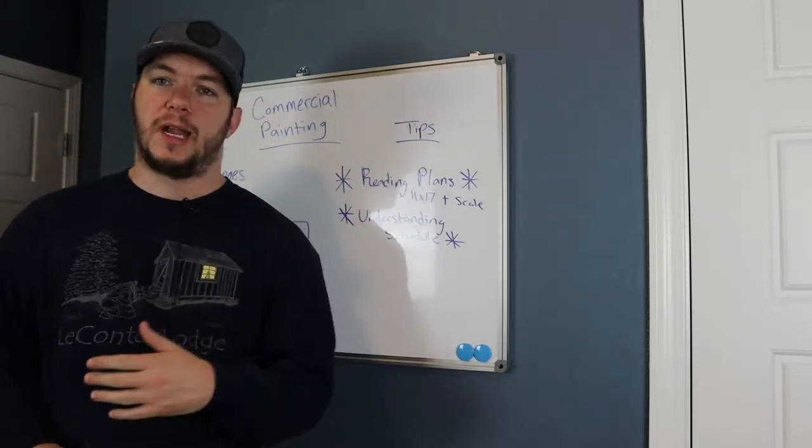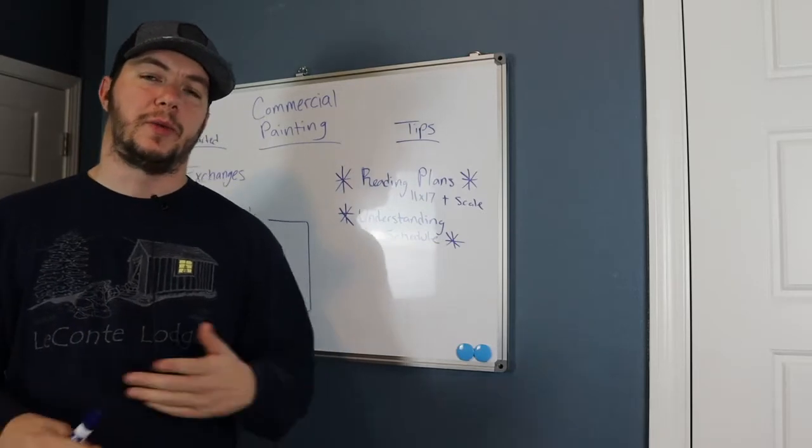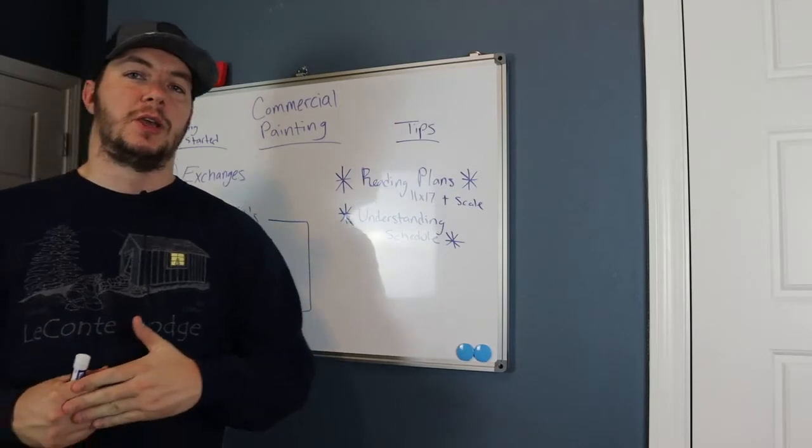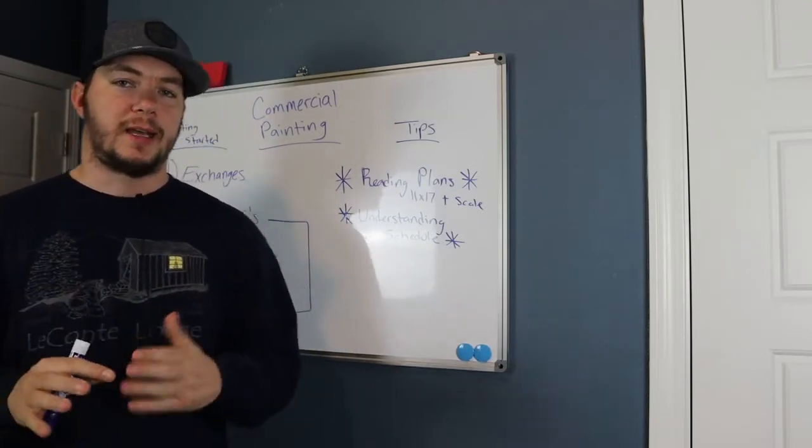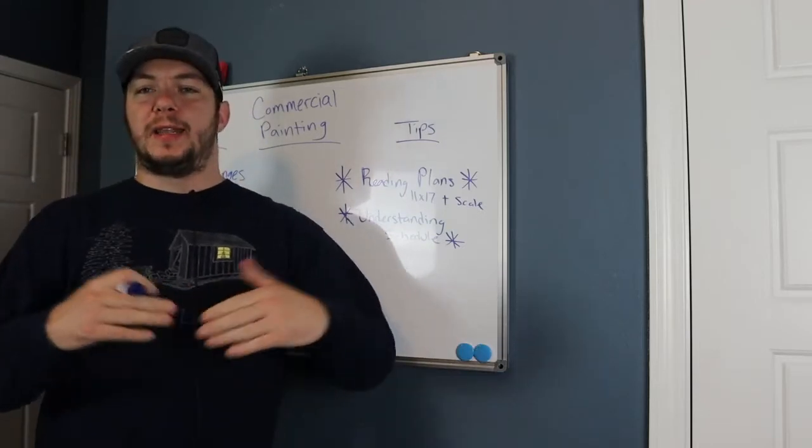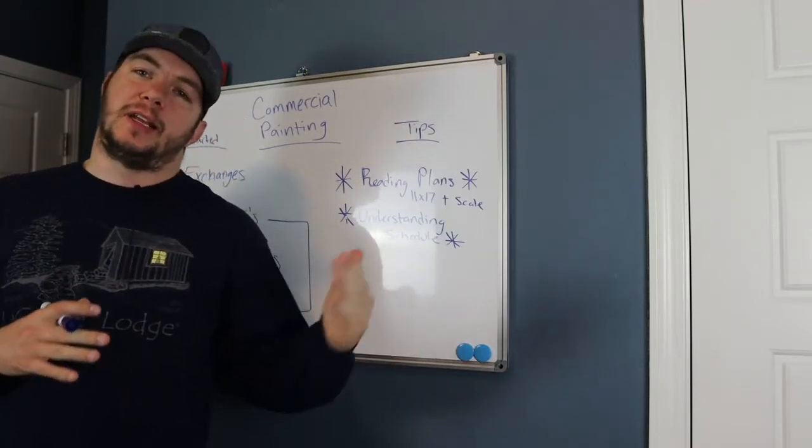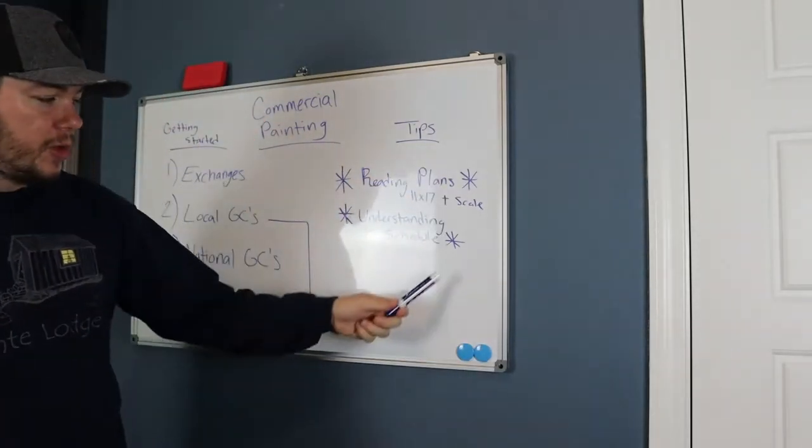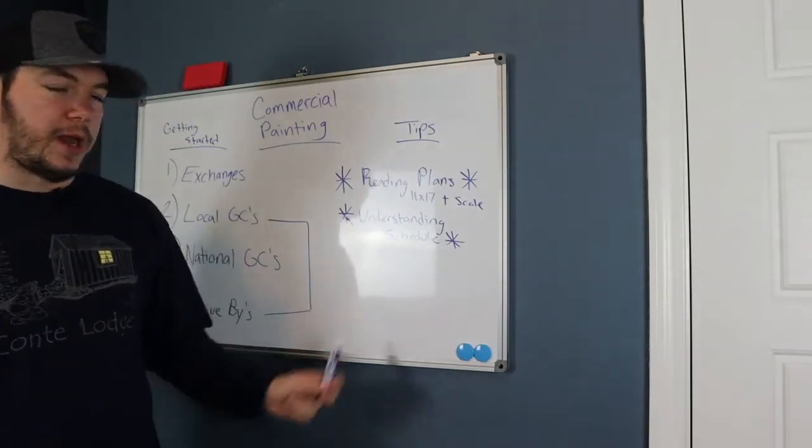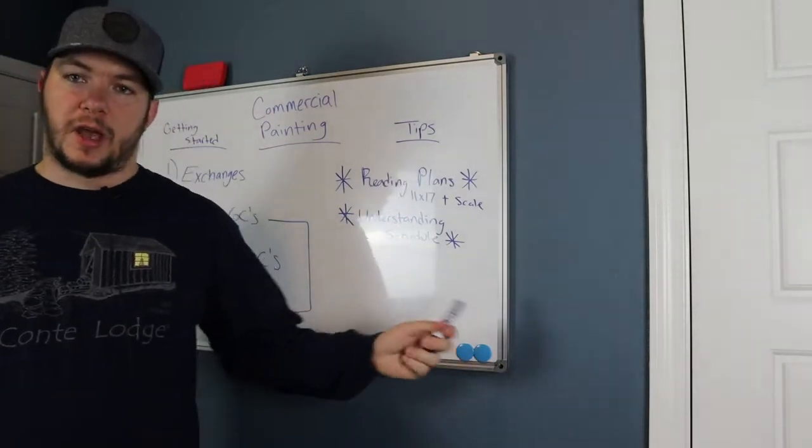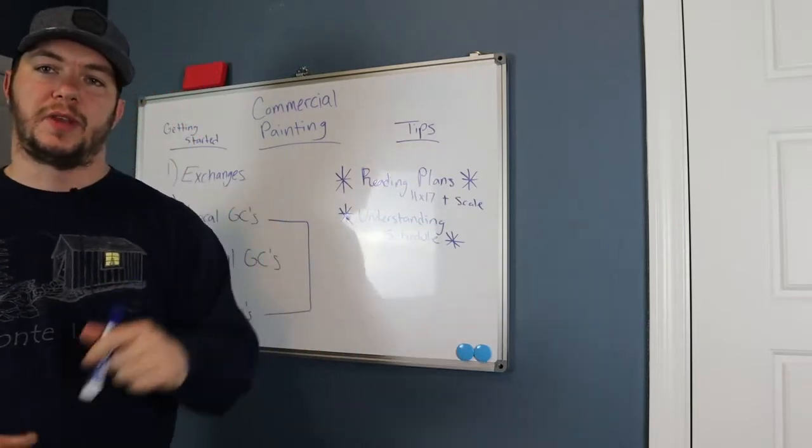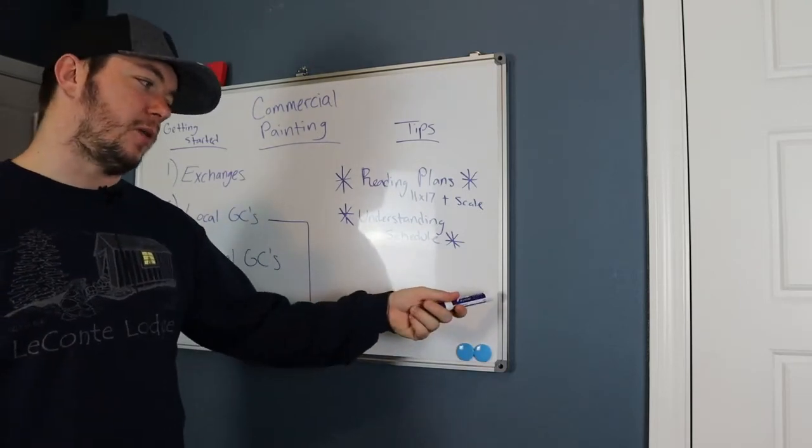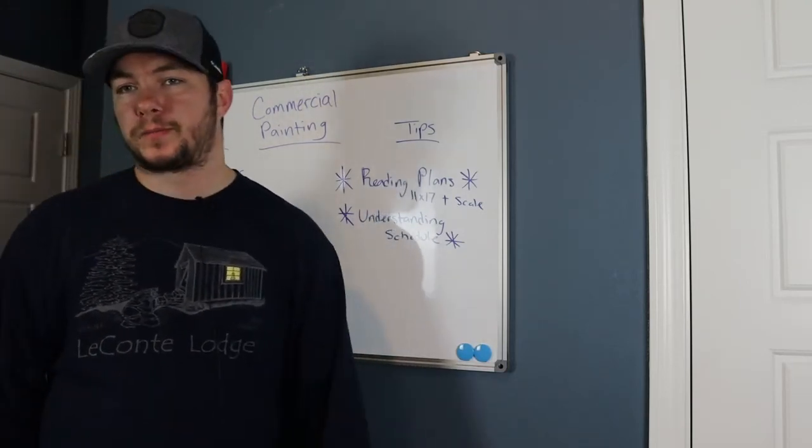Another important thing is understanding schedules and your LDs. Your LDs are your liquidated damages. So when you start looking at these jobs, pay attention to the specifications. Usually they'll throw a schedule in there with the spec package. It'll show you how many days that they give each trade for each phase of construction. So if they had ten rooms to paint, you'll look in there, it'll say three days for primer, three days for finished coat. I mean, break it out: three days for primer, two days for first coat, two days for final coat, a day for touch up.